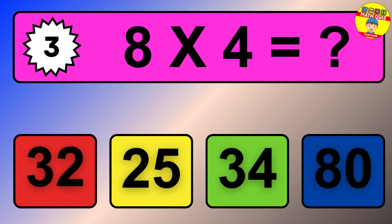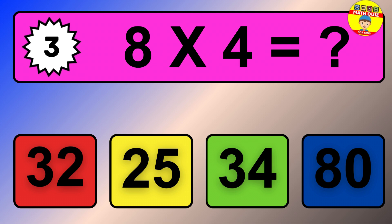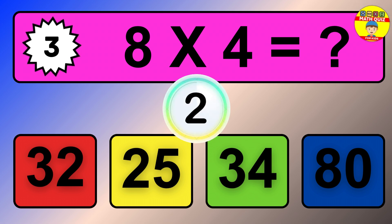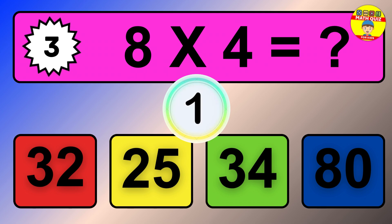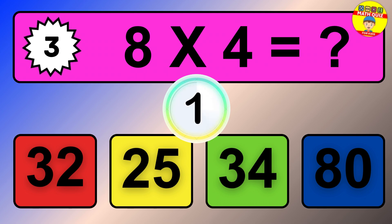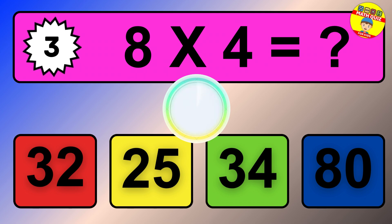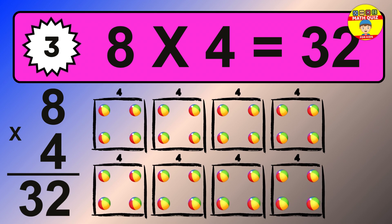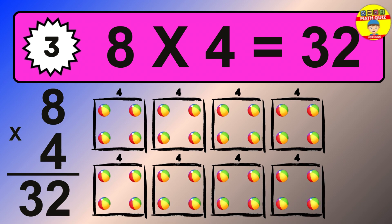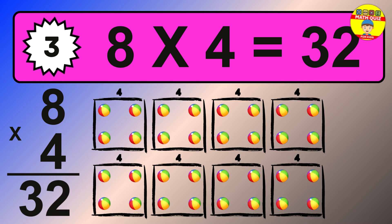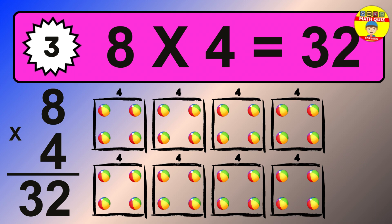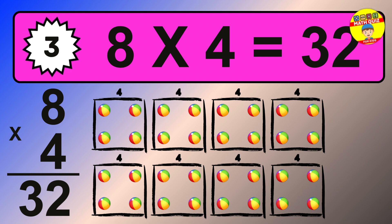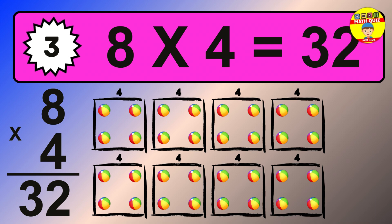Question 3. 8 times 4 equals what? The answer is 8 times 4 is 32. To calculate, we have 8 groups with 4 balls each one. So how many balls do we have? 32 balls.